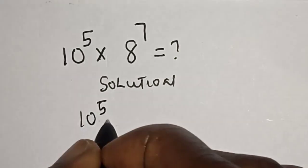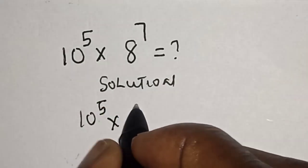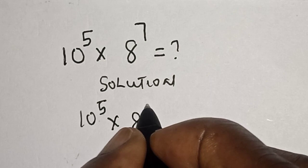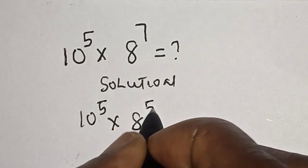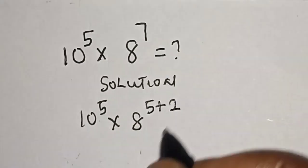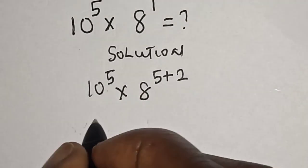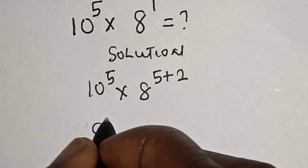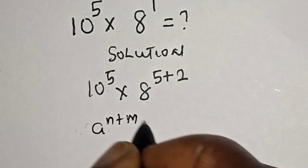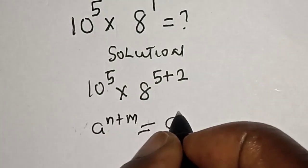This can be written as 8 raised to power 5 plus 2. Take note of this rule: a raised to power n plus m is equal to a raised to power n multiplied by a raised to power m.